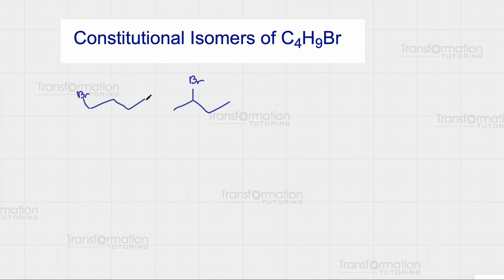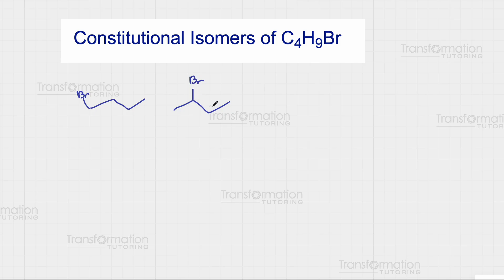Note that if you add bromine to this carbon, that's the same as adding it to this carbon — I would just start numbering from the right versus from the left. So be careful not to draw the same molecule twice and call them constitutional isomers. The best way to avoid that is by naming: this is 1-bromobutane and this is 2-bromobutane.